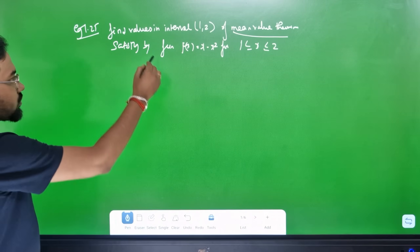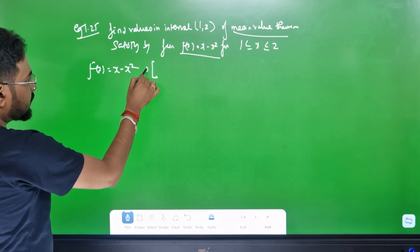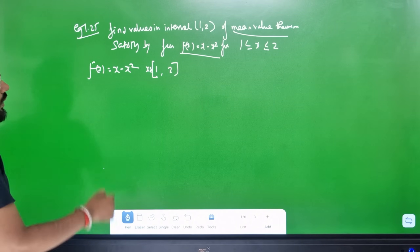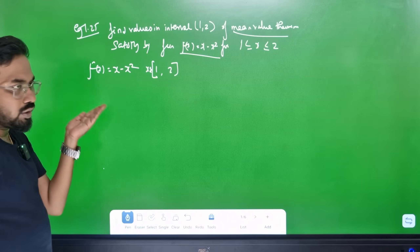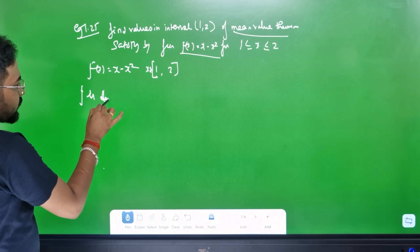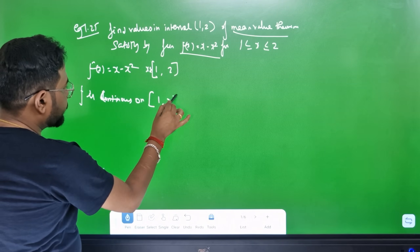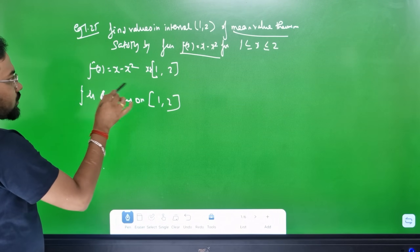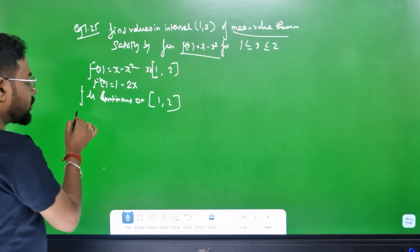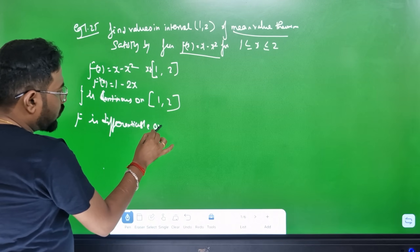Let's look at the function f(x) = x minus x squared on interval [1,2]. x belongs to [1,2]. The denominator is not equal to 0, so f is continuous on [1,2]. f'(x) is equal to 1 minus 2x, so f is differentiable on the open interval (1,2).